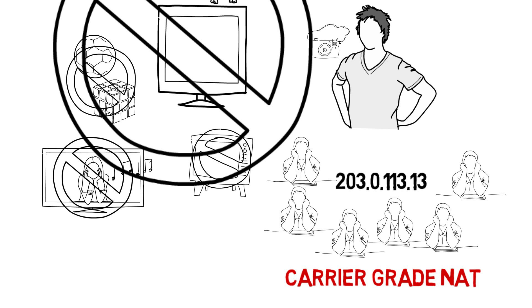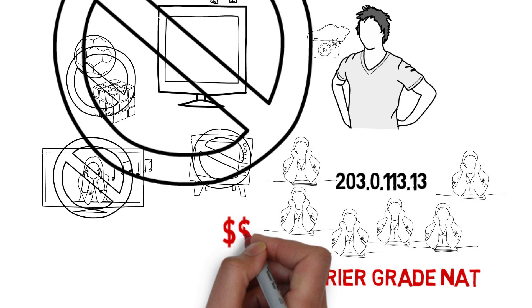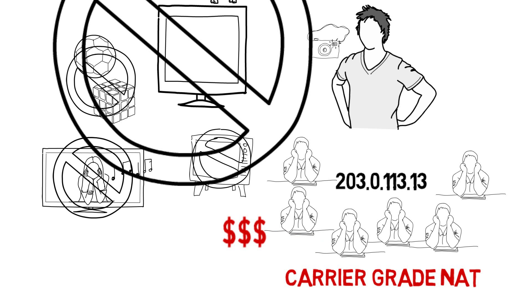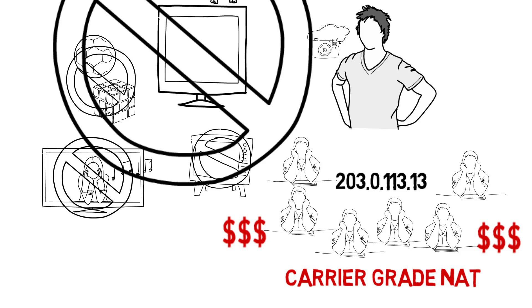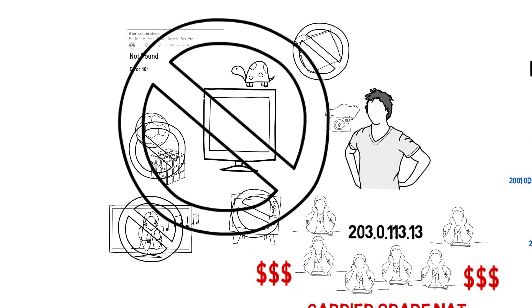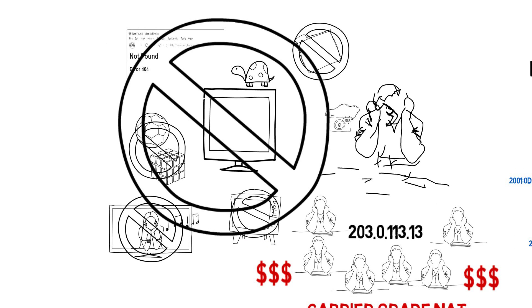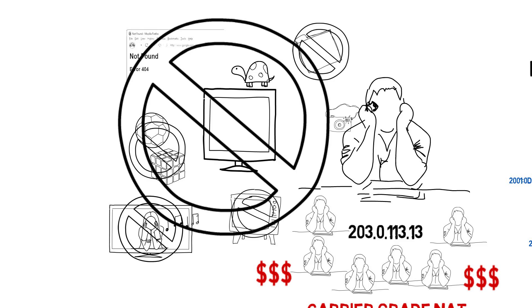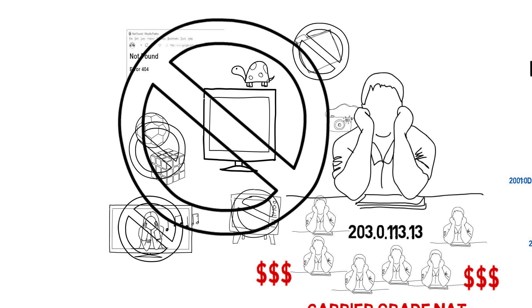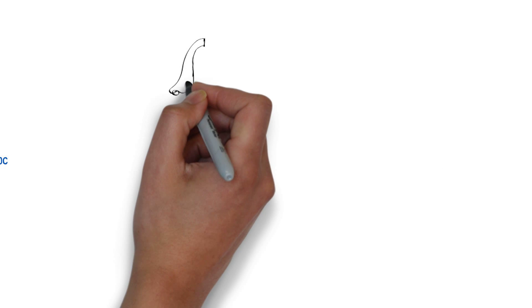The price of Internet access will also increase over time. The Internet will not go as fast as it used to, and it will be more and more difficult to uncover fraud and other online crimes. John and many other Internet users will not be very happy with this situation.